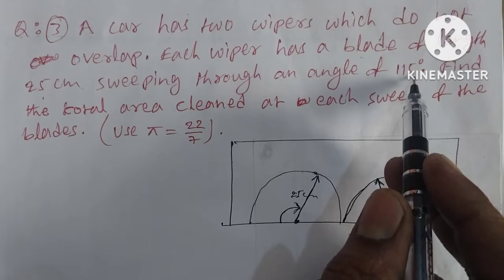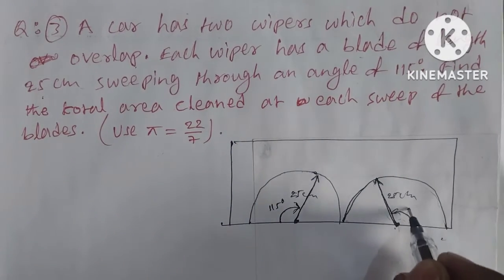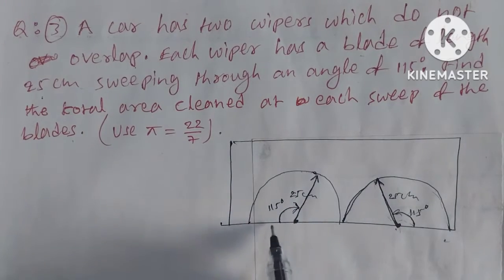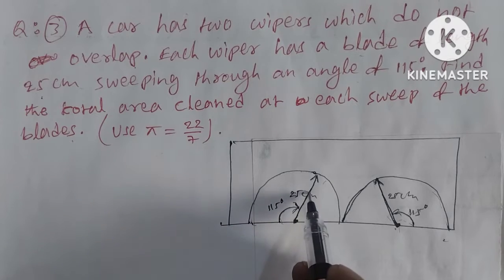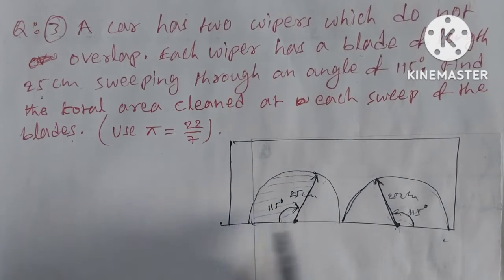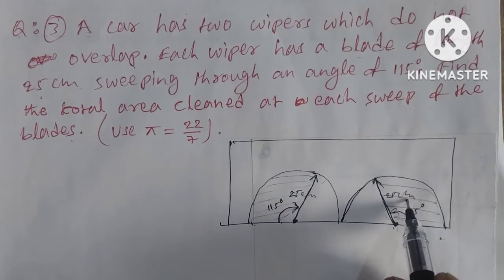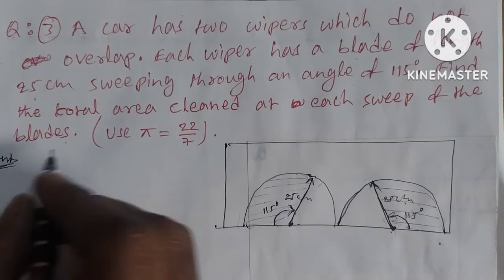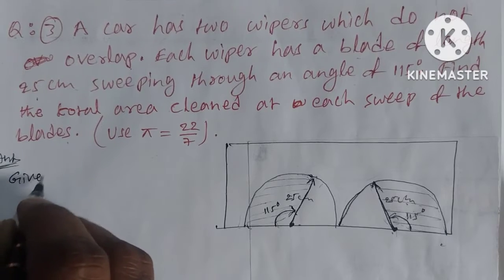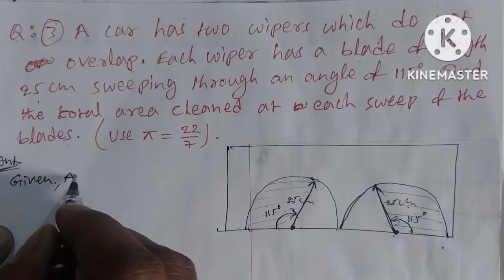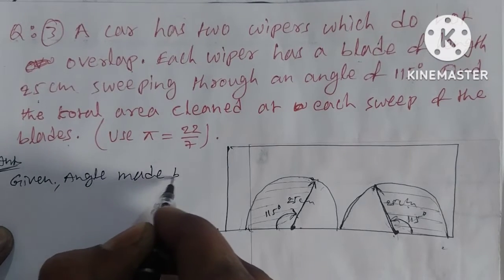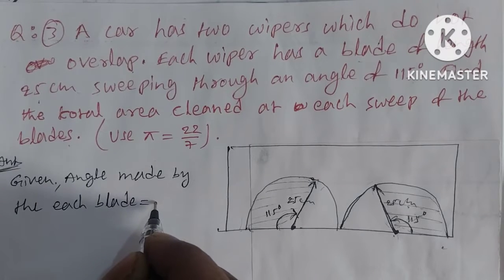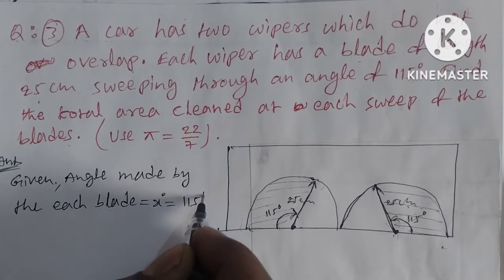Each wiper blade sweeps through an angle of 115 degrees. Find the total area cleaned at each sweep of the blades. The sector is defined by the radius and the angle. The angle made by each blade is 115 degrees.